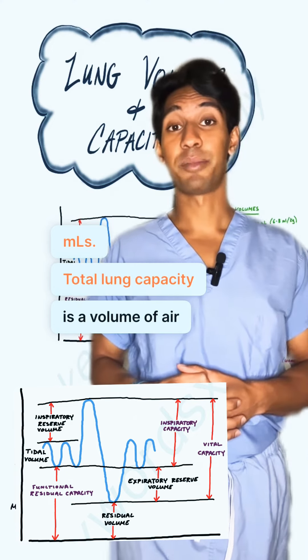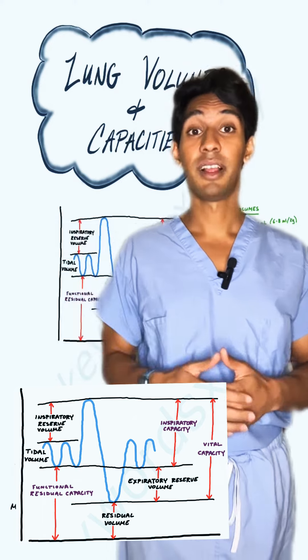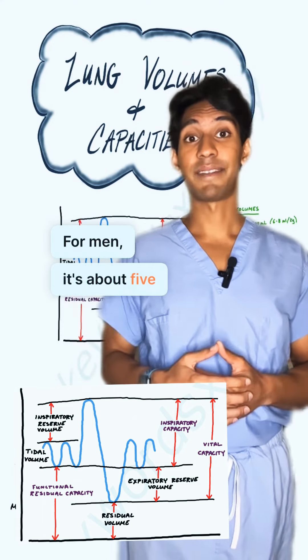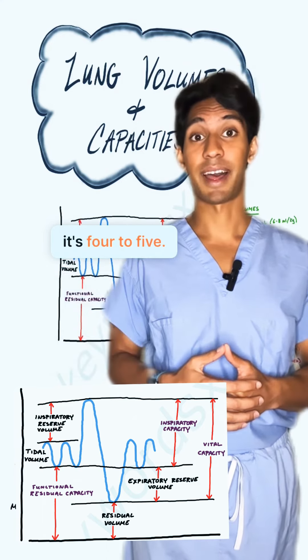The total lung capacity is the volume of air after maximal inspiration. For men it's about 5 to 6 liters and for females it's 4 to 5 liters.